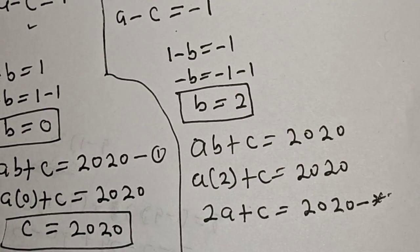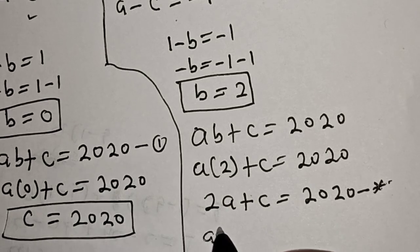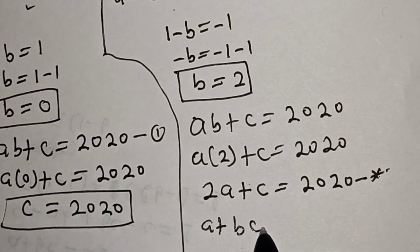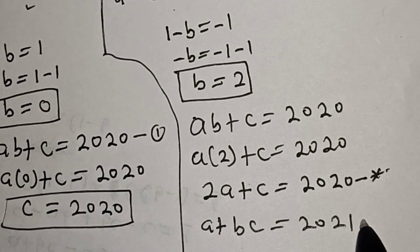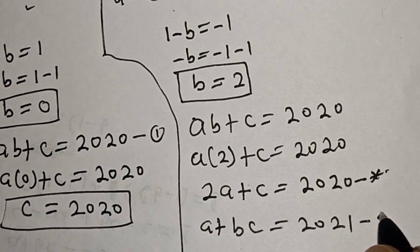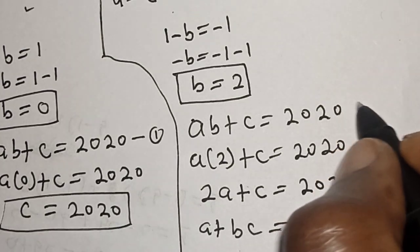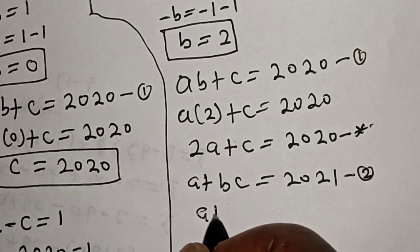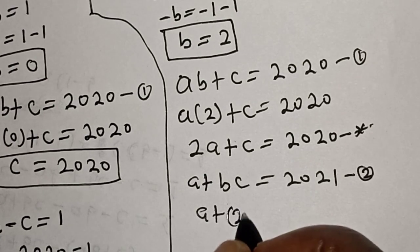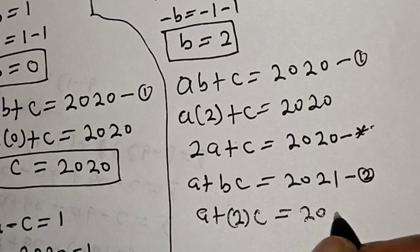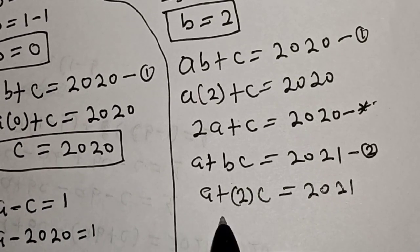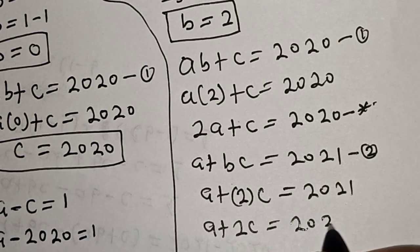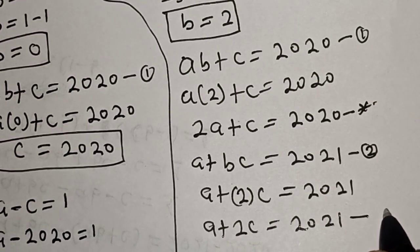From equation 2: A + BC = 2021, with B = 2, gives A + 2C = 2021. Let's call this equation double star.